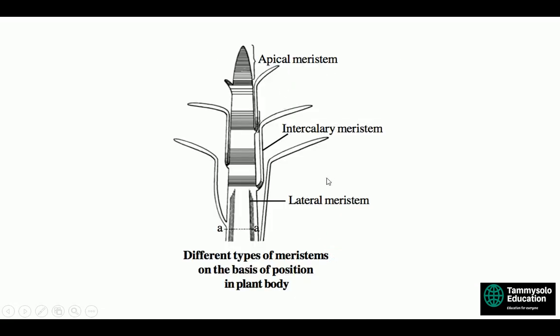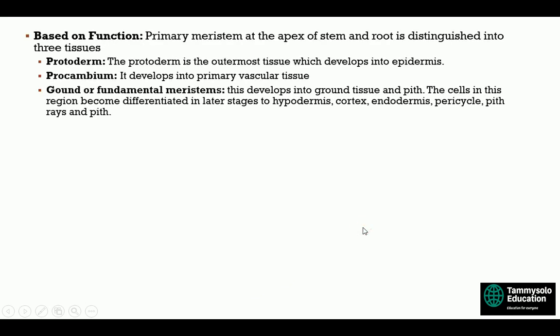We have three types of meristems based on position: lateral, apical, and intercalary. The intercalary meristems were left behind by the apex and lead to the formation of leaves and branches. Based on function, the meristem at the apex of stem and root is distinguished into three tissues: the protoderm, which develops into epidermis; the procambium, which develops into primary vascular tissues; and the ground or fundamental meristem, which develops into ground tissue and pith.